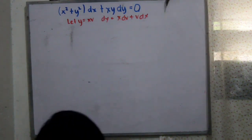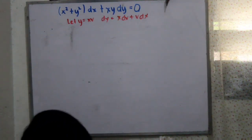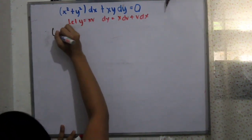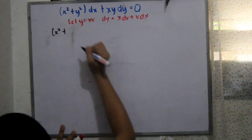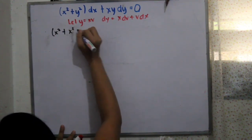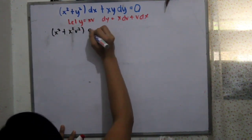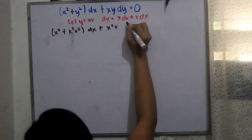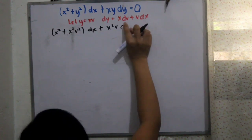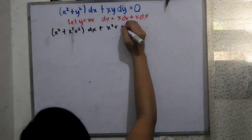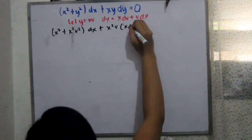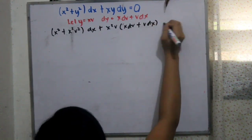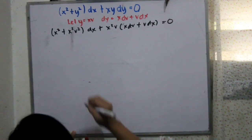We'll let y equals xv, and the differential of y equals xdv plus vdx. We substituted all the y values into xv, giving us x squared plus x squared v squared multiplied by dx plus xdv plus vdx, since that is the value of dy.